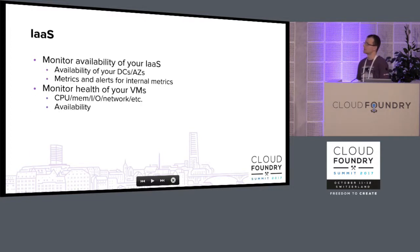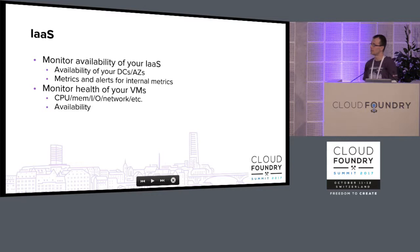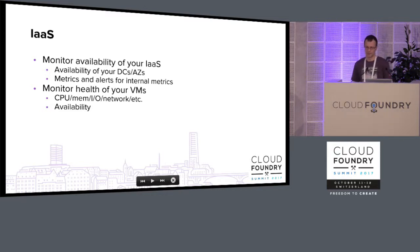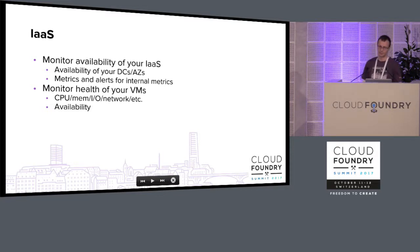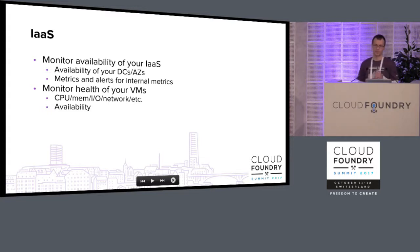The first layer we are going to discuss is Infrastructure as a Service. You can monitor availability of the infrastructure itself — for example, availability of data centers and availability zones. Also, you can collect metrics and create alerts based on internal metrics if your infrastructure provides some kind of API.